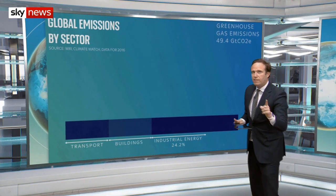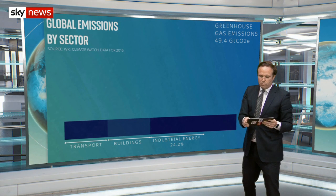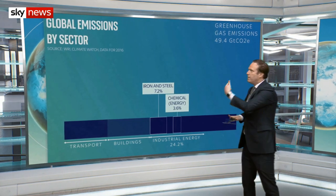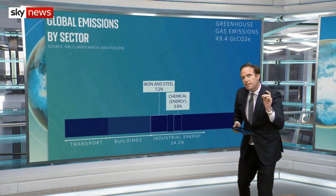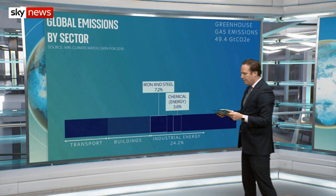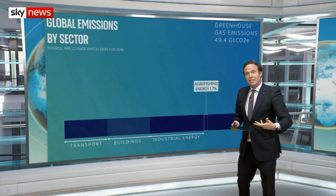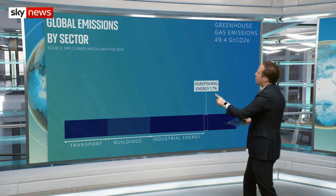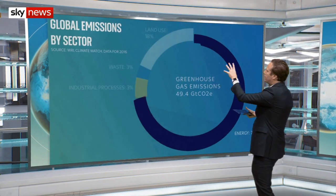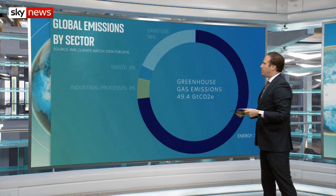Bigger than either of those things — and this is really the interesting thing — bigger than any of the buildings we work or live in, is industrial energy. Stuff like iron and steel: blast furnaces account for 7.2% of global emissions. You've got the chemical industry — we saw the chemical process earlier, but now consider the energy that goes into setting up a plant for a chemical reaction: 3.6%. Other sectors like agriculture and fishing have an energy cost too. Then fuel combustion and oil and gas — by far and away, the biggest chunk of emissions comes from energy processes around the world that we all rely on.